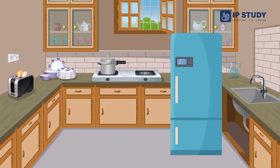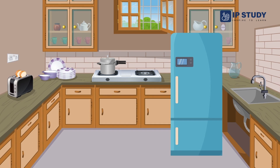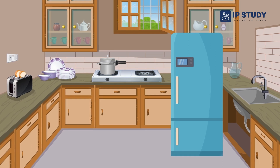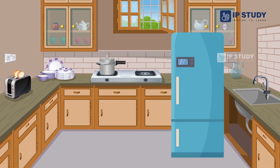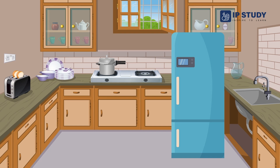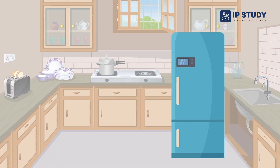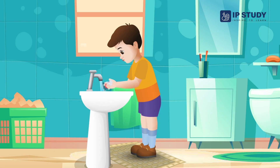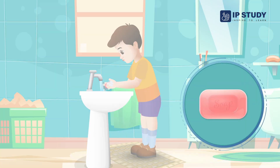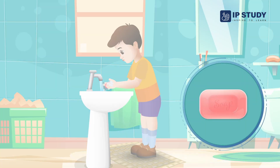The refrigerator which we use in home for keeping foods and vegetables fresh — the shape of that refrigerator is rectangle. The soap which we use for cleaning the hand in home — the shape of that soap is also rectangle.